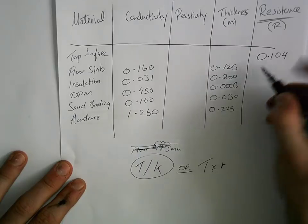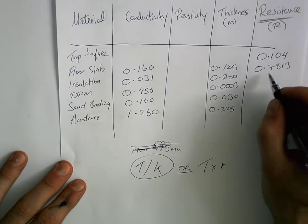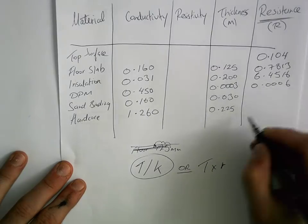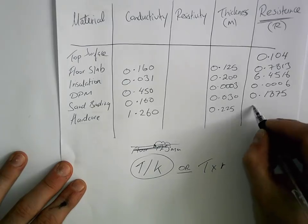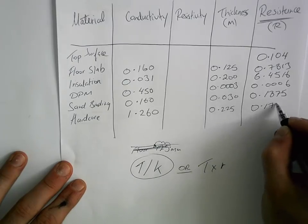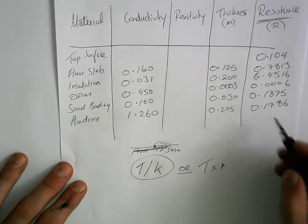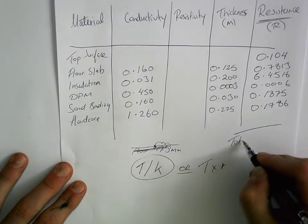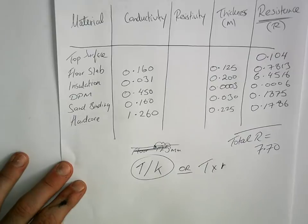The resistance values are: floor slab 0.7813, insulation quite high at 6.4516, DPM almost non-existent, sand binding 0.1875, and hardcore 0.1786. Three decimal places is enough for full marks. The next stage is to total all your resistances — just add them together — giving a total resistance of 7.70.